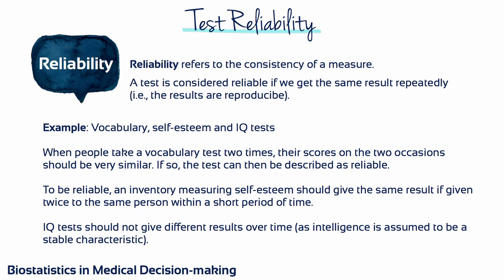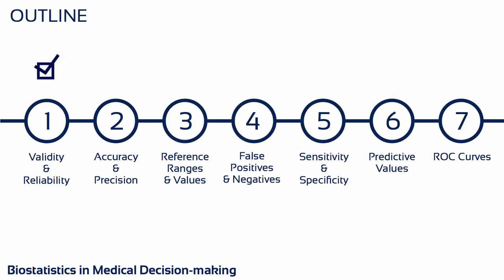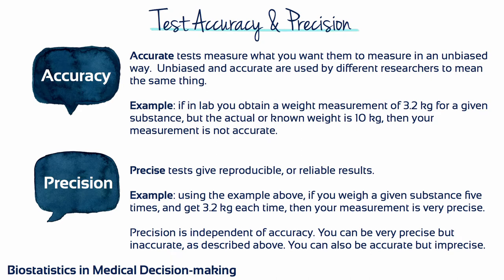A reliable test gives the same or very similar result every time it is used to measure a variable that has not changed. Like validity and reliability, accuracy and precision do not depend on each other. A test can be accurate but not precise, or precise but not accurate. All combinations of precision and accuracy are possible. The dart boards in the next slide illustrate this nicely.